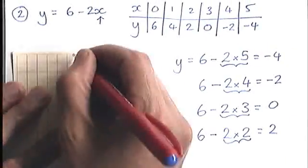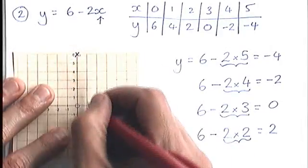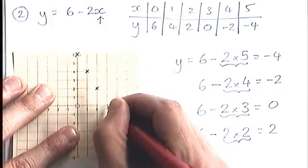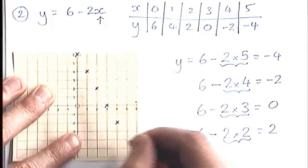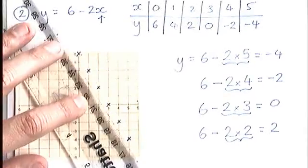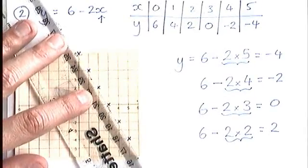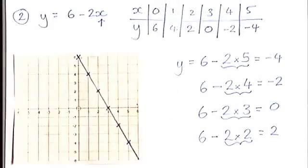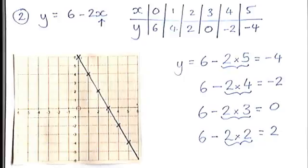So now I go ahead and try and plot these numbers. 0, 6, 1, 4, 2, 2, 3, 0, 4, minus 2, and 5, minus 4, like that. And once again, nice straight line through those, just like that. And you would have got full marks.